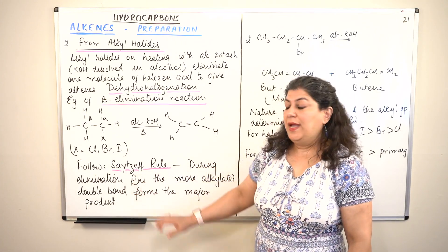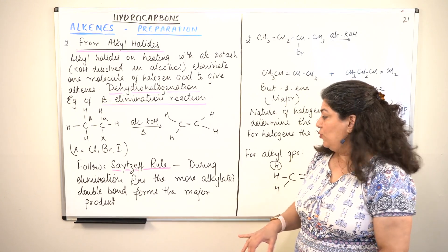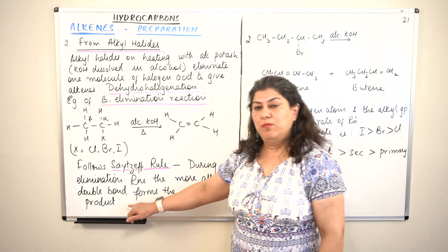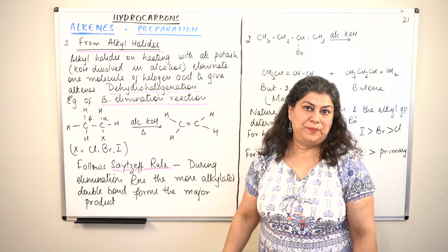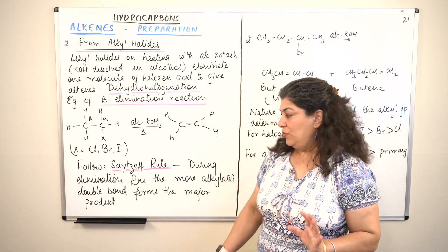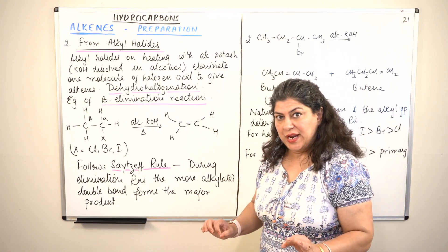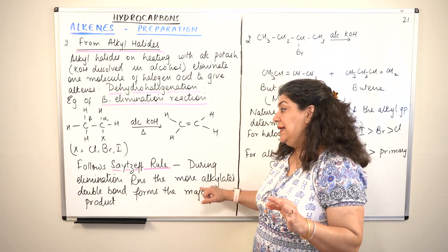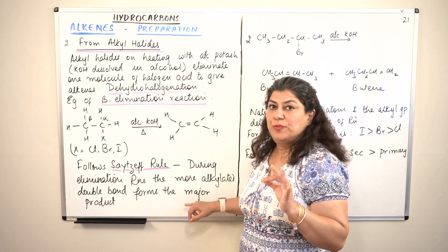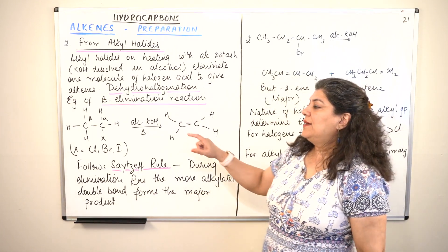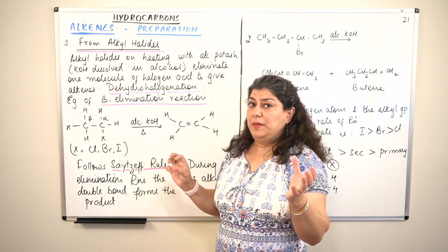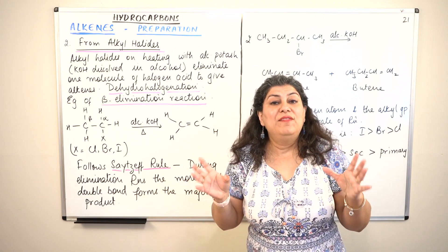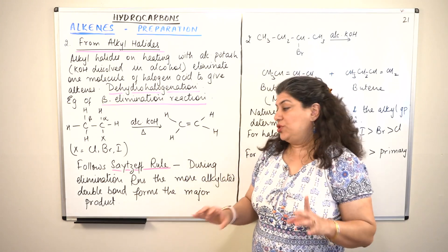This rule is known as Saytzeff's rule. According to Saytzeff's rule, during elimination reactions, the more alkylated double bond forms the major product. The beta carbon which allows the alkene to be more alkylated will be favored, and that product will be the major product.